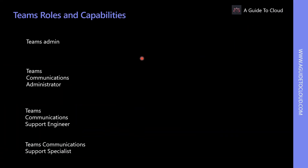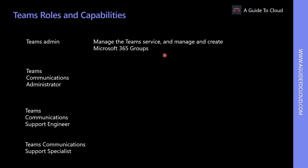Let's look at the tasks that each role can perform, as well as the tools administrators can use in the Microsoft Teams admin center and in PowerShell. The Teams admin, formerly known as Teams service administrator, can manage the Teams service and create Microsoft 365 groups. Everything in the Microsoft Teams admin center and associated PowerShell controls — including manage meetings, manage voice, manage messaging, and all org-wide settings — can be managed by this user.